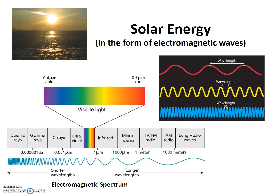Physical geographers are primarily interested in three bands of the electromagnetic spectrum. Ultraviolet radiation ranges from 0.01 to 0.4 micrometers. Visible light ranges from 0.4 to 0.7 micrometers. And infrared radiation has quite a broad range, from 0.7 micrometers all the way up to about a thousand micrometers, or one millimeter.